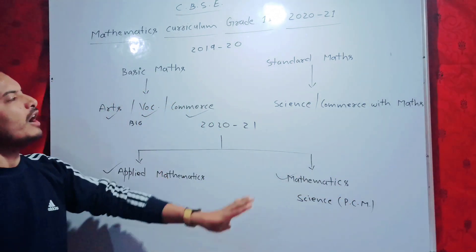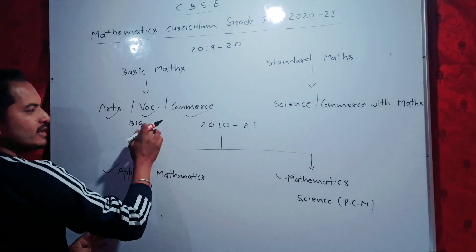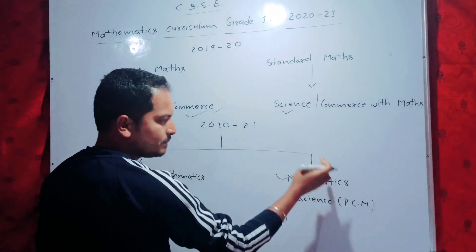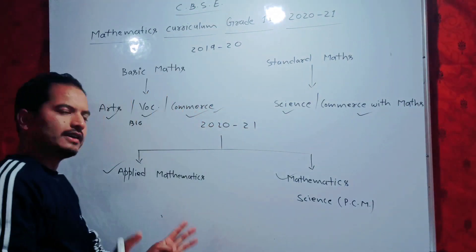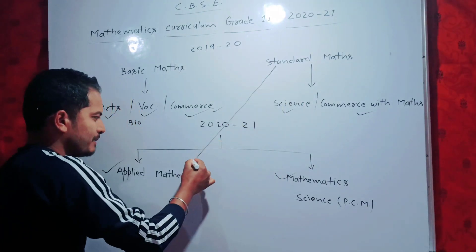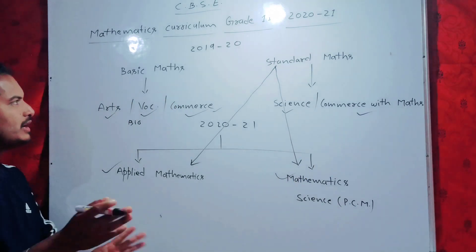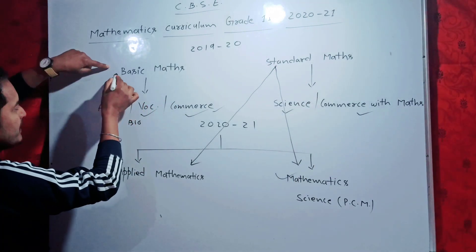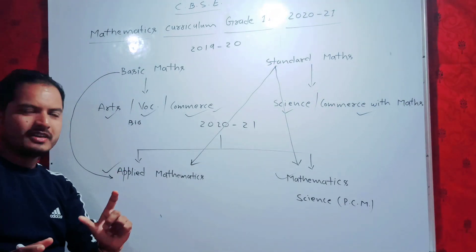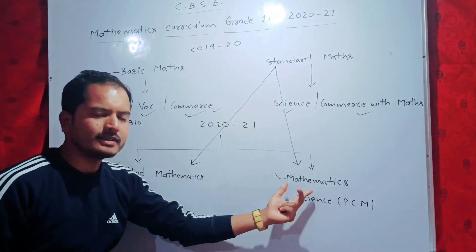Those who have studied standard mathematics can opt for arts, commerce, science biology, science with PCM, and commerce with mathematics. Applied mathematics can also be selected in Class 11, and simply mathematics can also be selected in Class 11. Basic maths can only be selected in Class 11 by certain streams.